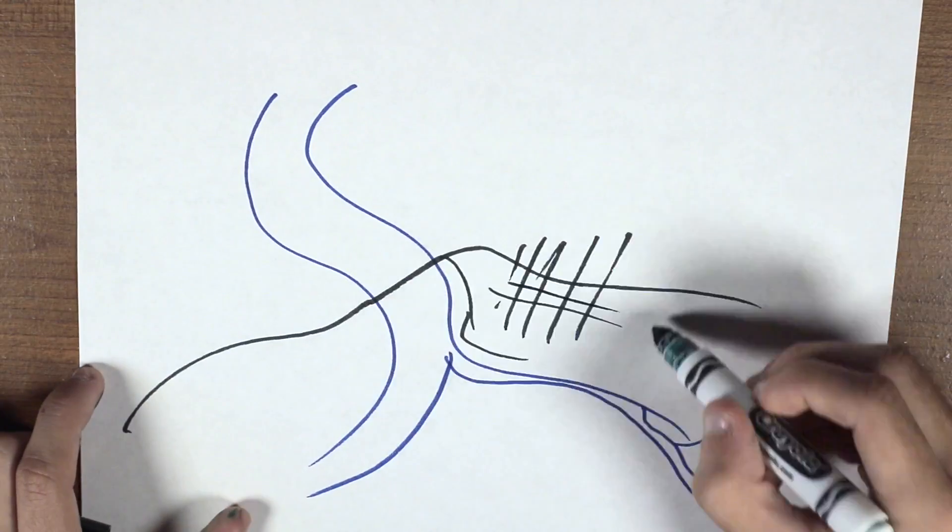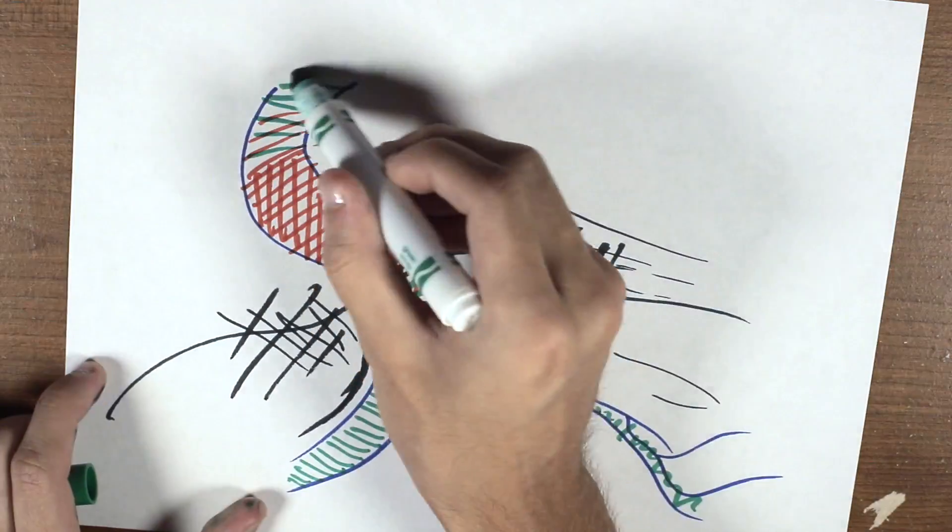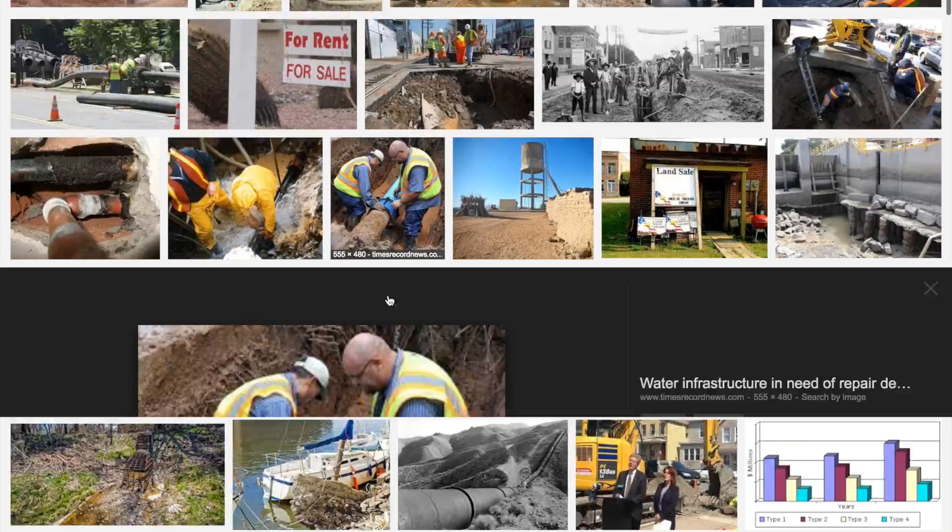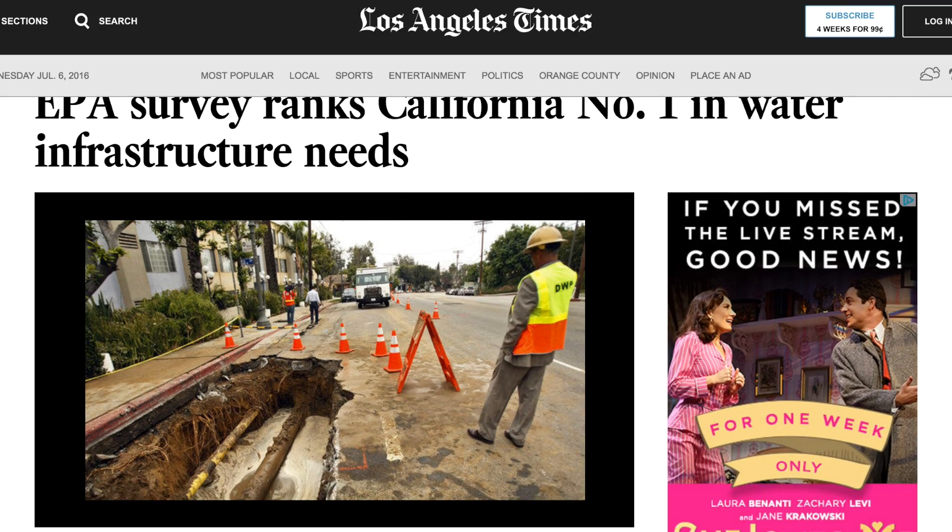If an unsafe water source is detected on the map, communities could use the data to raise awareness and urge their local representatives to invest in repairing infrastructure.